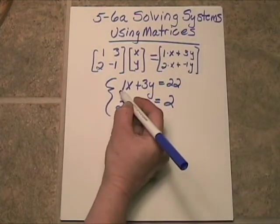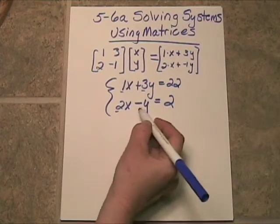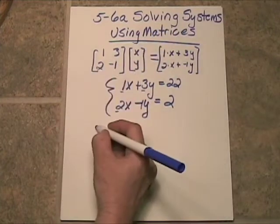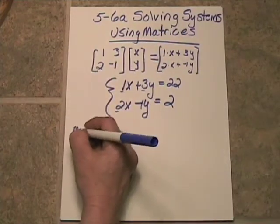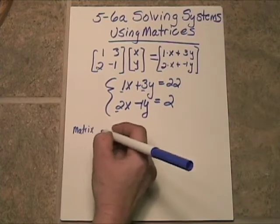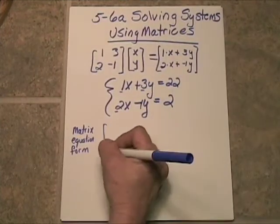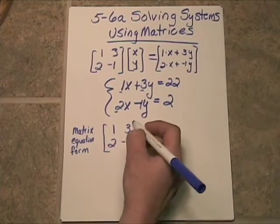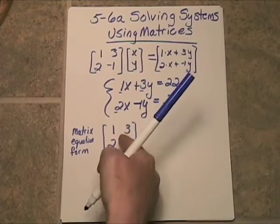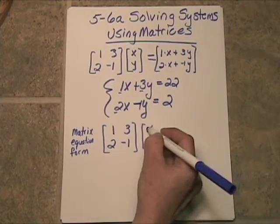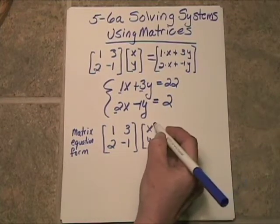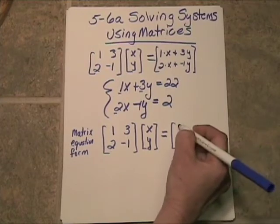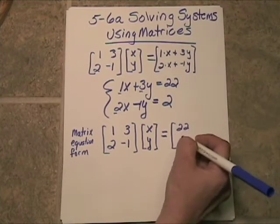What we're going to do is take these coefficients, 1, 3, 2, and negative 1, and we're going to put them in a matrix like we have up here. So this is called matrix equation form. It will look like this: [1 3; 2 -1]. Now we will take that matrix times the point matrix, x, y, and we'll set it equal to the answers, which are 22 and 2.